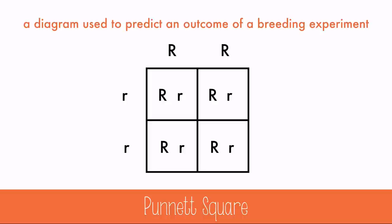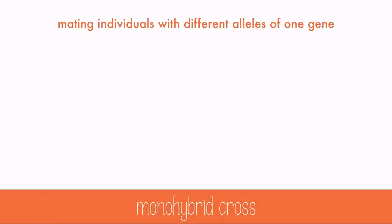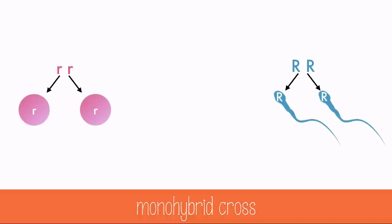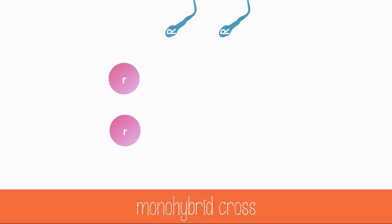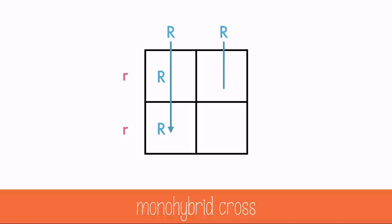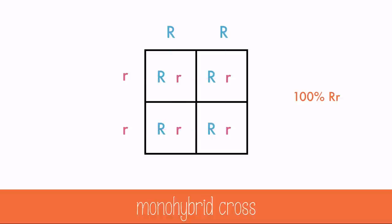We'll start with the simplest kind of Punnett Square: a monohybrid cross. Here we have individuals with different alleles of one gene. The male and female only give half of their alleles, so we need to split their alleles up. Typically, the male alleles are written on the top and the females on the side, but it doesn't actually matter. Bring the letters on the top down and fill in each box, and letters on the side come across to each box.